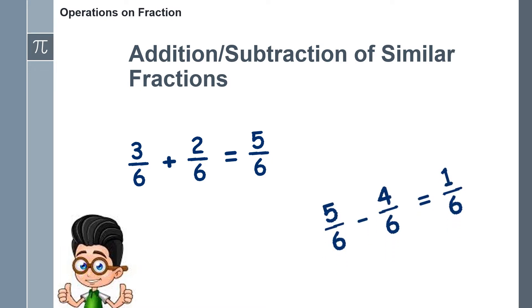Another example, 5 over 6 minus 4 over 6. Just subtract directly the numerators and reduce the answer if reducible.